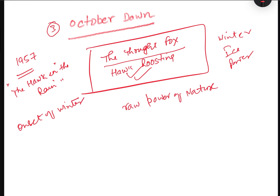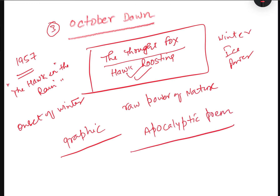It anticipates the freezing cold. The poet uses graphic imagery in this poem in order to make the points clear to us. This poem can also be categorized as an apocalyptic poem. When you say apocalyptic, it means forecasting the ultimate destiny of the world, or relating to the total destruction of mankind.